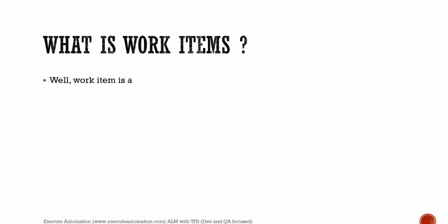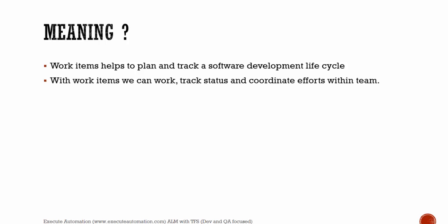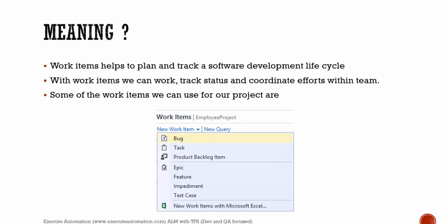What is work items? Work items help to plan and track a software development lifecycle. With work items, we can track status and coordinate efforts within a team. Some of the work items we can use for our projects are: you can create a bug, you can create a task, you can create product backlog items which are essentially requirements, and you can create epics, features, impediments, test cases, etc.